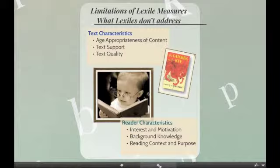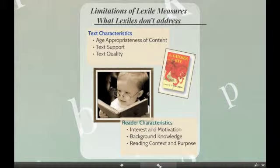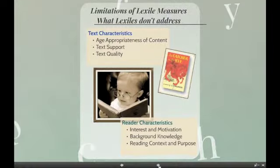A book with a low Lexile Measure may not be age-appropriate for certain readers. For example, because of its sentence structure and vocabulary level, Catcher in the Rye has a Lexile Measure of 790 Lexiles — yet very few would recommend it to a 5th grade reader. The Lexile Measure provides a starting point for considering text complexity. When selecting appropriate material to meet the needs of the reader, input from readers, parents, teachers, and the media specialist is always advised.